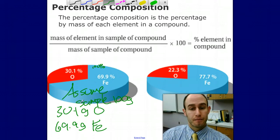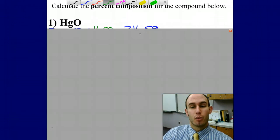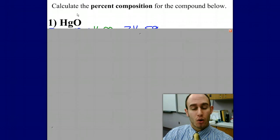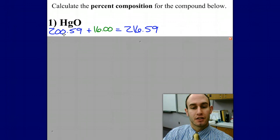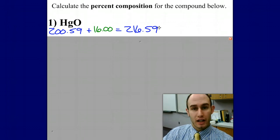Let's look at an example. Calculate the percent composition for the compound below. My first step for HgO is to get the molar mass or the formula mass. Mercury plus oxygen is going to be 200.59, that's right off the periodic table, plus the mass of oxygen which is 16, gives me 216.59 grams of HgO.